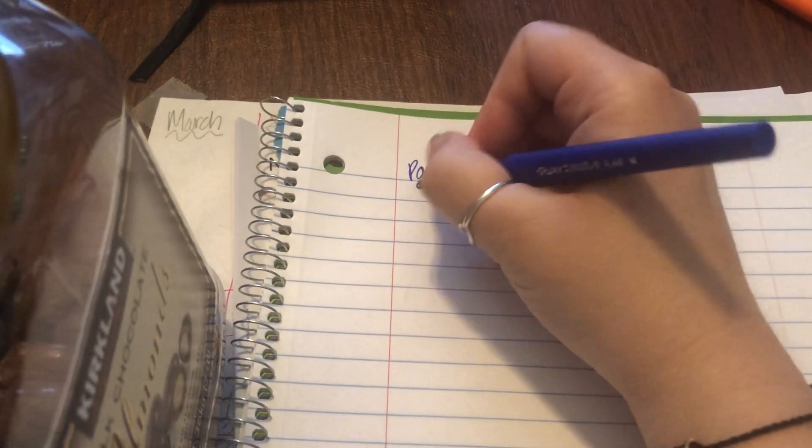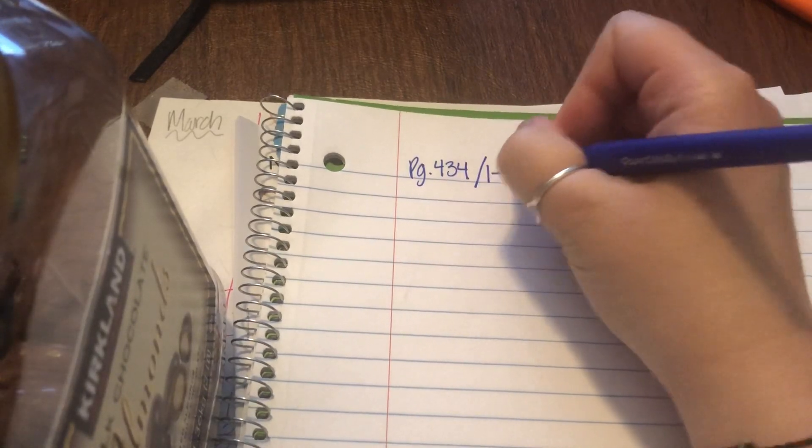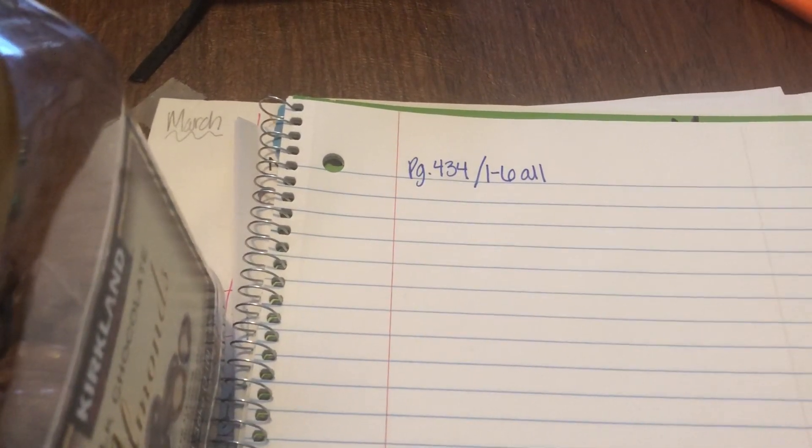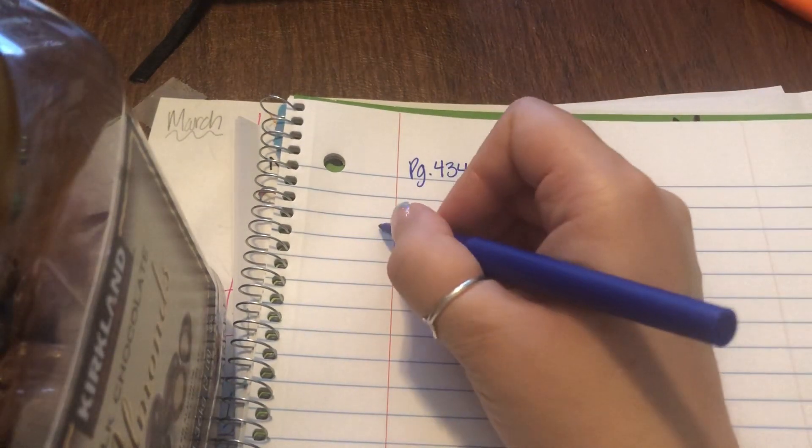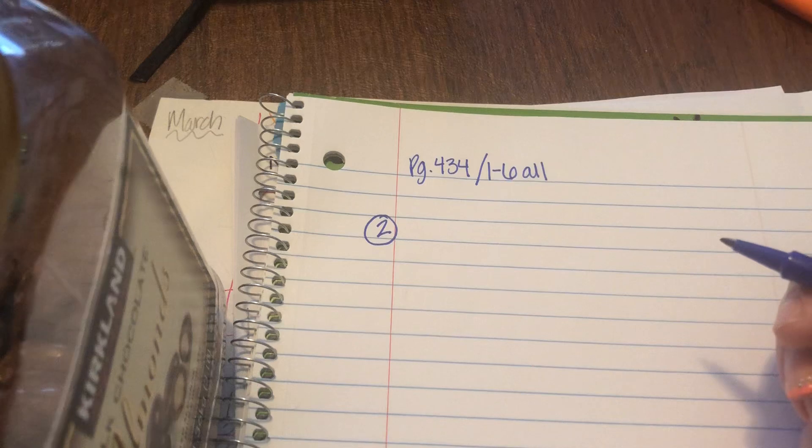Well, hello there, my little mathematicians. I'm going to help you get started on your homework, which is in your textbook, page 434, numbers 1 through 6 all. Notice I'm not going to do them. I'm just going to do some suggestions and get you started on it. So you're going to do number one on your own, but number two, let me go ahead and give you some suggestions for it.